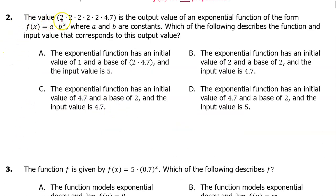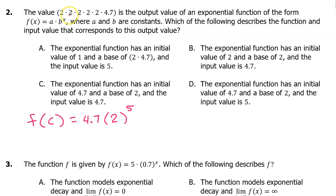Number 2. The value 2×2×2×2×2×4.7 is the output value of an exponential function of the form f(x) = a·b^x, where a and b are constants. Which of the following describes the function and input value corresponding to this output? The five 2s multiply to 2 to the 5th power, giving us 4.7 times 2^5. Let's temporarily call the input value c, so f(c) equals this expression.